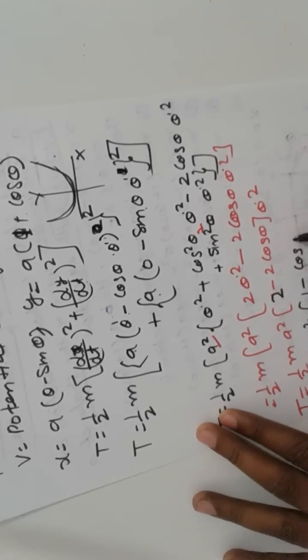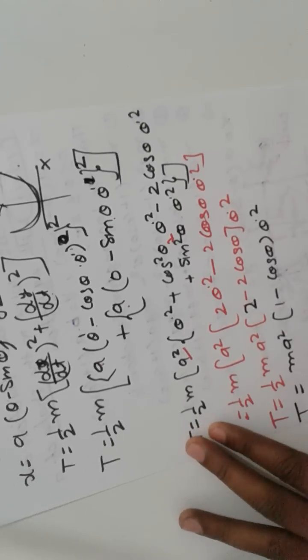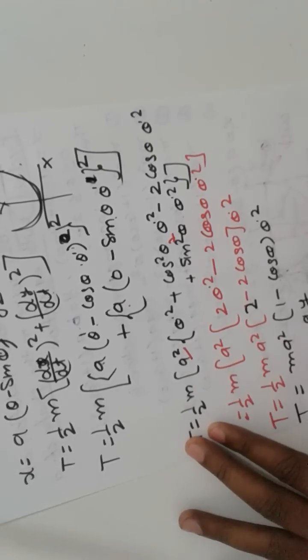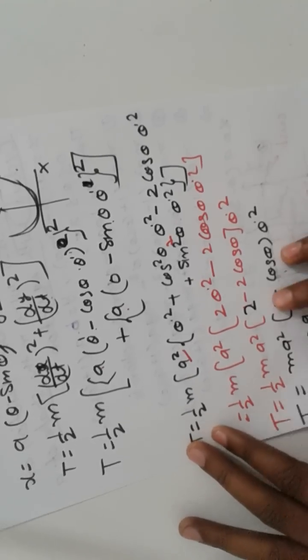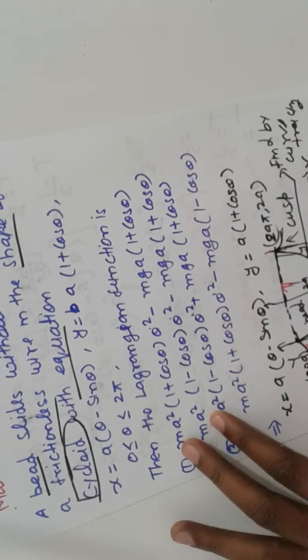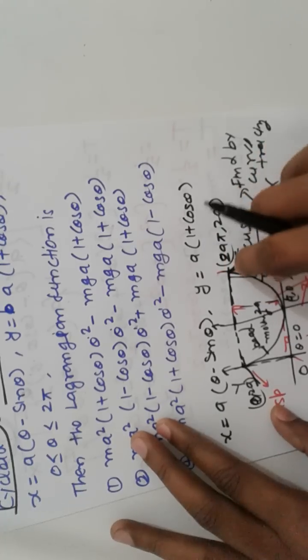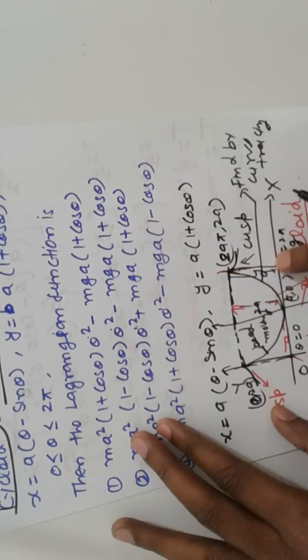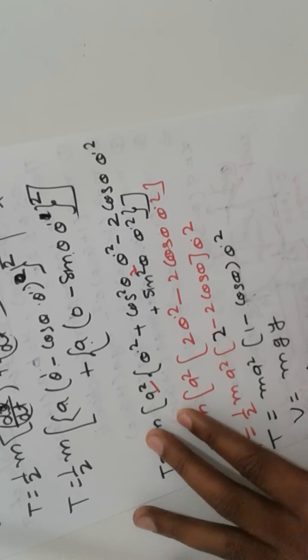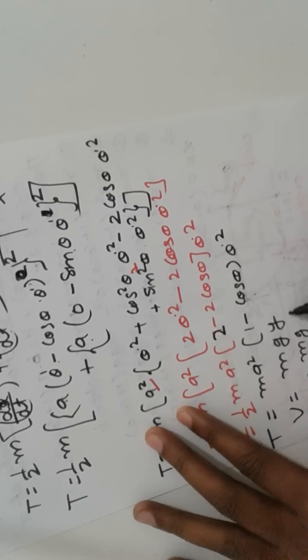Next, V, the potential energy, is mgy. The height is y, so potential energy is mgy. Putting the value: m g a times 1 plus cos theta. That is the value of the potential energy.